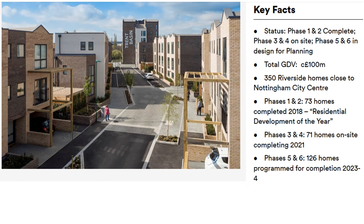Key facts: there are in total six phases of development. Phase one and two are now complete. Phase three and four are happening currently — so if you go down to the Trent Basin area and see building work, that's phase three and four. Total spend: one hundred million pounds — that's a key feature of this development project. There are 350 homes close to the city centre. 73 homes have been built already in phase one and two, completed in 2018. The project was given residential development of the year status.